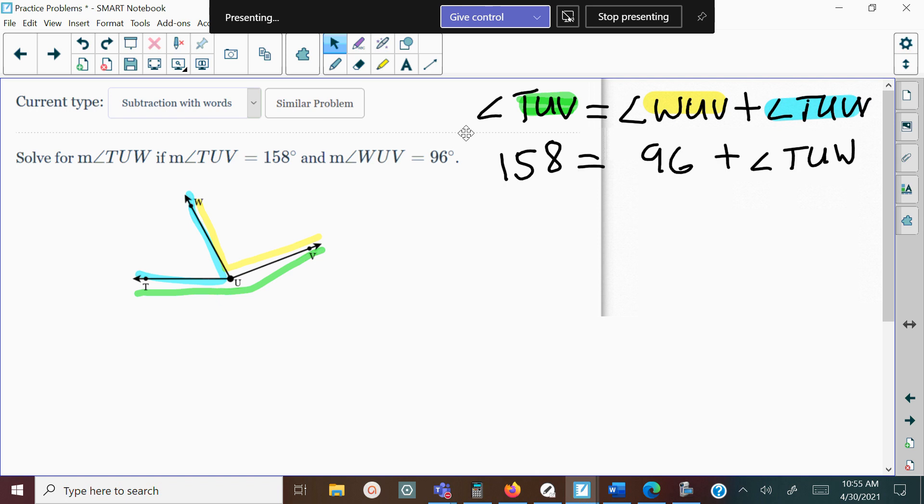And do we have a measurement for WUV? Yes, it's 96. The one we're looking for is angle TUW. You see how I correspond those right there. So now we're going to solve for angle TUW like it's X, and we're going to subtract 96 on both sides. We get the measurement of 62. So 62 equals angle TUW.